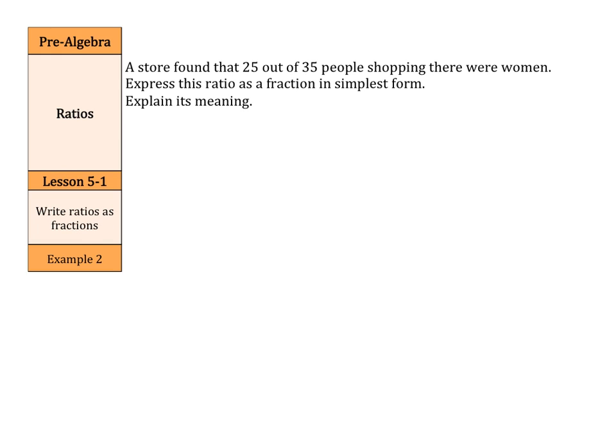In example two, a store found that 25 out of 35 people shopping there were women. Express this ratio as a fraction in simplest form and explain its meaning. Well, let's set up the 25 women out of 35 people.